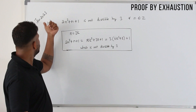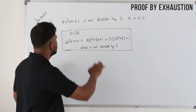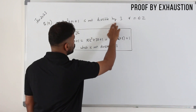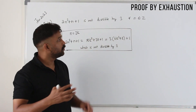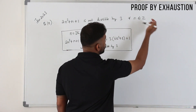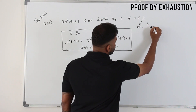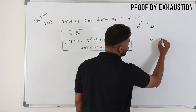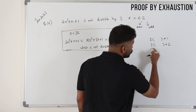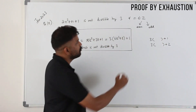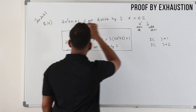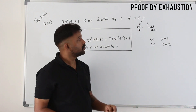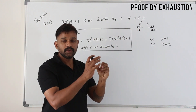Now this next question — January 2020, question 10 — is slightly different. They mention proof by exhaustion explicitly: prove that 2n² + n + 1 is not divisible by 3 for all integers. When you see infinite numbers, you divide them into categories. If you divide into even and odd and substitute, you won't be able to prove it's not divisible by 3. You need to write the expression in a specific form to show this.